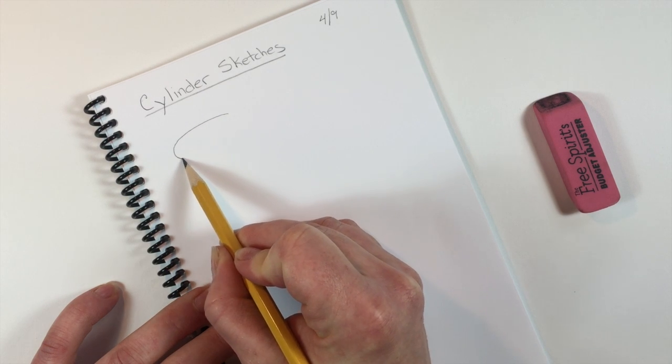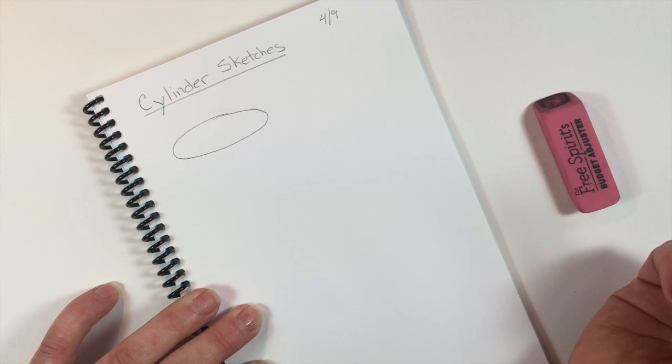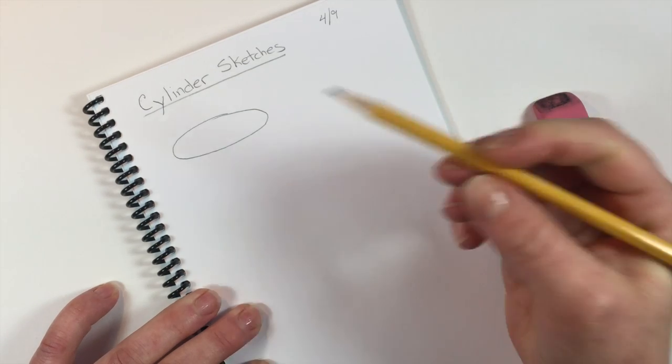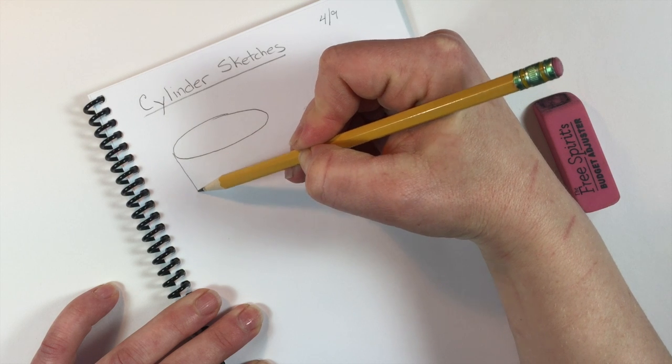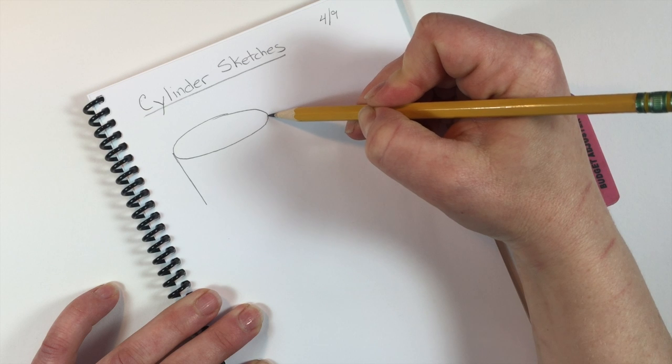First, I'll draw an oval. Remember, this is practice. So don't worry if it's not perfect or draw lightly so you can erase it if you'd like. I'll draw two straight sides that come down from each side of my oval.